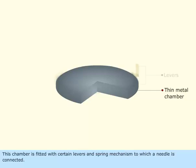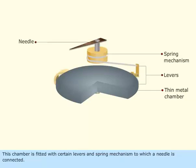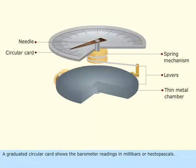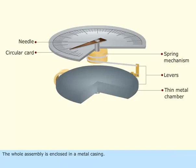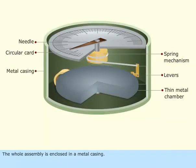This chamber is fitted with certain levers and spring mechanism to which a needle is connected. A graduated circular card shows the barometer readings in millibars or hectopascals. The whole assembly is enclosed in a metal casing.